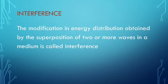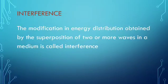What do you mean by interference? The modification in energy distribution obtained by the superposition of two or more waves in a medium is called interference. That means two or more waves superimposed in one medium. The modification in energy distribution is called interference.